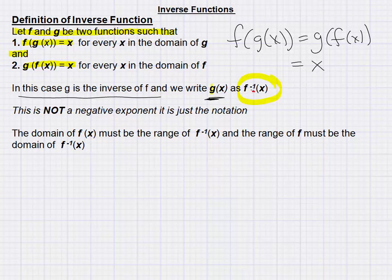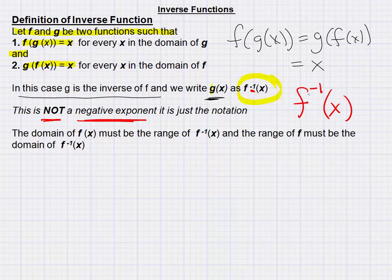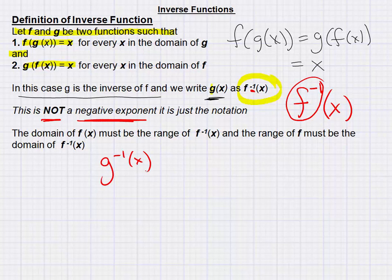If g is the inverse of f, we use this notation: we replace g with the f-inverse notation, written f⁻¹(x). This negative 1 is not a negative exponent — it is purely a notation. I'm replacing g with f⁻¹ to show that g is the inverse of f. I could also say f is the inverse of g, and write that as g⁻¹.